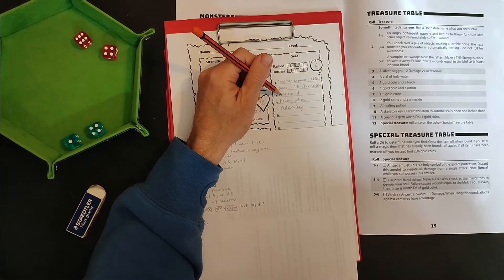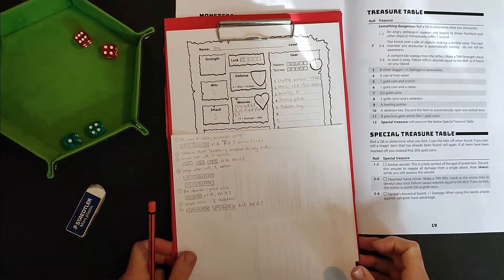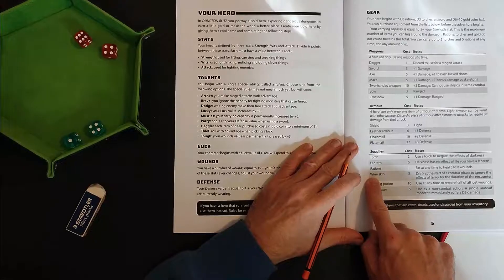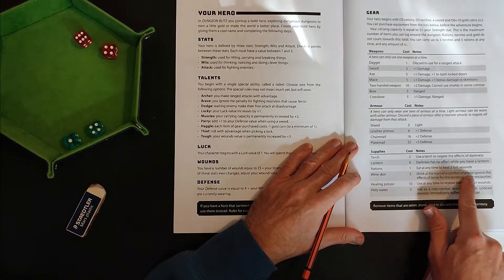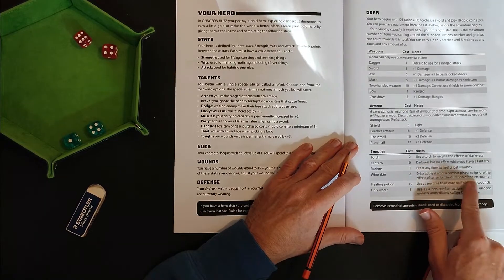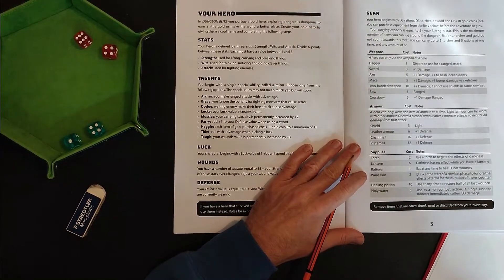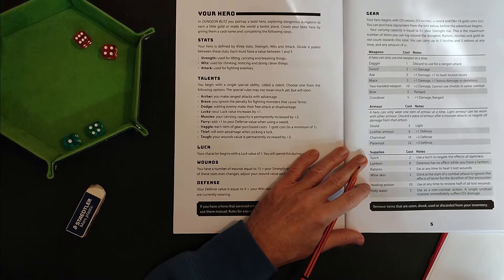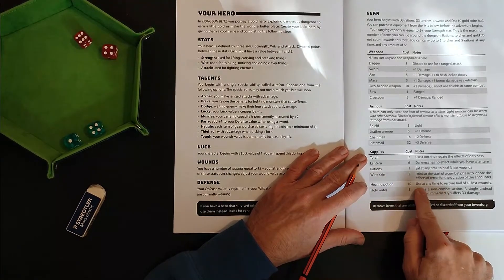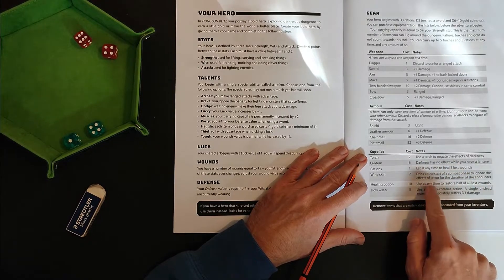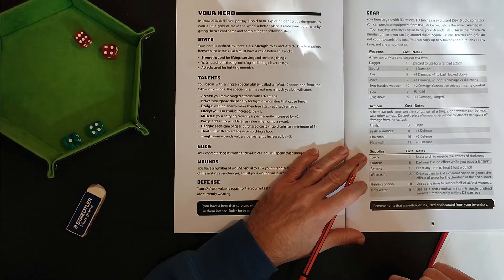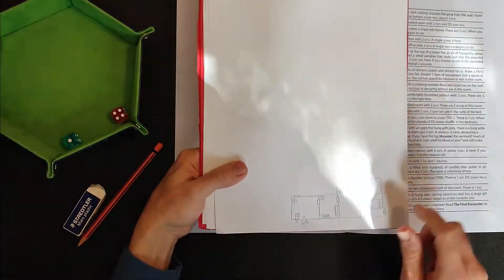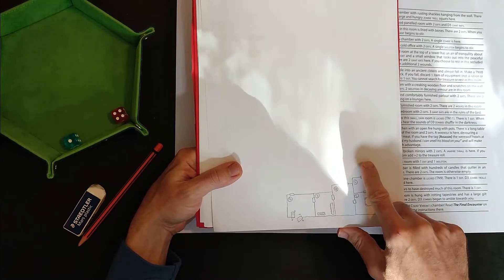That's a good point. What does the healing potion do? What does the wine skin do? Let's find that out. So a wine skin: drink at the start of combat to ignore the effects of terror. So I could have used a wine skin during my fight with the ghostly bride to ignore the terror effect, which would have made that fight a lot less painful. Healing potion. Look, they cost 10 gold. Use at any time to restore half of all lost wounds. You can use it at any time, which means you can use it during a combat. So that's quite valuable. Right. Roll to see where we are going. We're going to go. We're going to keep going up, I think. So we'll go up here.